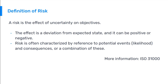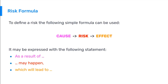The following simple formula can be used — cause, risk, and effect — expressed as: 'As a result of something, something may happen.' For example: 'As a result of a phishing attack, a leak of credentials may happen, which will lead to unauthorized access to the security environment.' Creating such risk statements for most of the risks we are aware of helps us build a risk matrix and highlight the most important risks and problems.